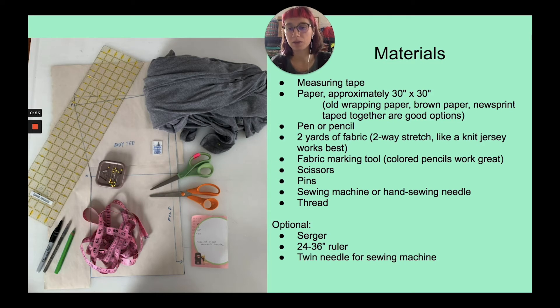Scissors. I have two pairs of scissors, one for cutting fabric and one for cutting paper. My pins for sewing. I will be using a sewing machine. You can also do it by hand. I have thread for the sewing machine. And then optional things, you could use a serger instead of a sewing machine, works really well for knits. I will be using a clear grid ruler to draw my pattern and then a twin needle on the sewing machine to do my finishing.